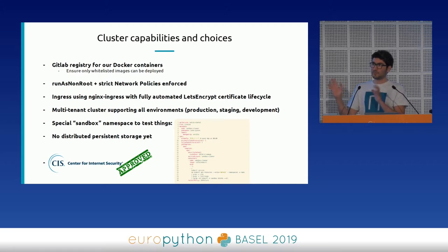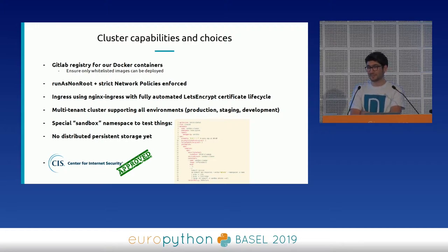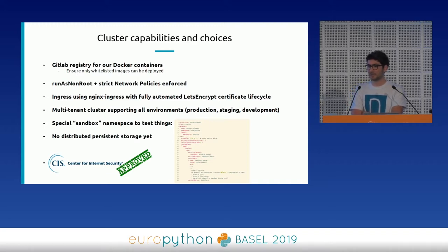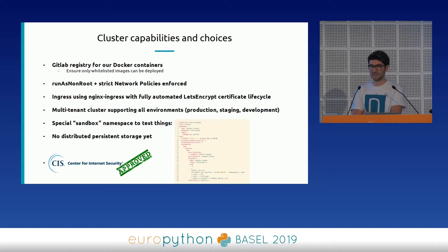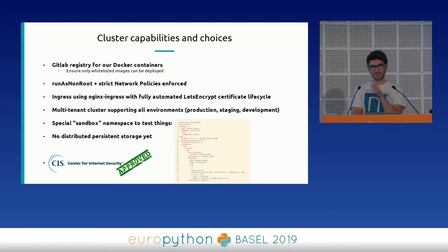To give an overview of the cluster's capabilities: GitLab also offers an image registry that we leverage, and we enforce security QA — only whitelisted images can be deployed, and no random image from the web runs on the cluster. We enforce 'run as non-root' from the start — no container can run on Kubernetes if it runs as root. We also have strict network policies that regulate how pods communicate with each other, basically disallowing almost everything unless it's coming from the ingress.